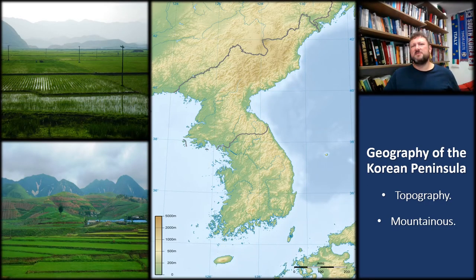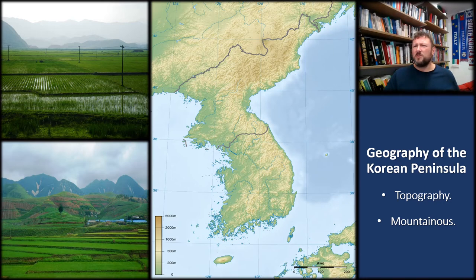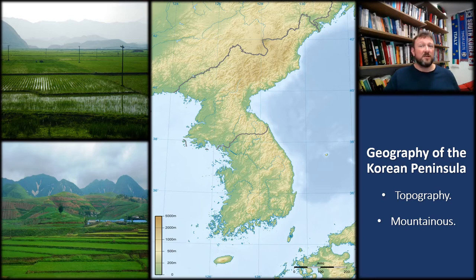As we can see on this map, the topography of the Korean Peninsula is extremely mountainous. It has quite a small amount of arable land for farming, and most of this is centred in the south. In relation to agriculture, this topography defines what can be grown where and in what quantities.